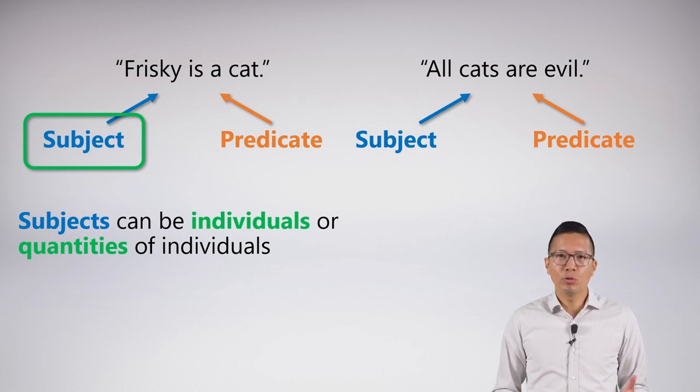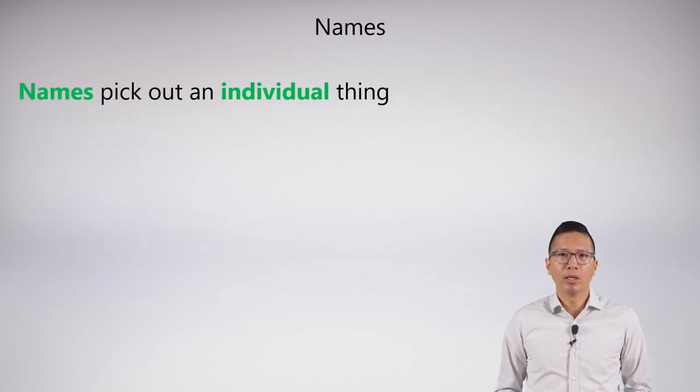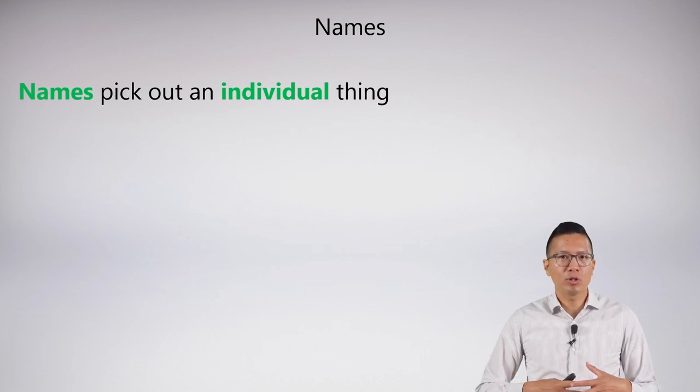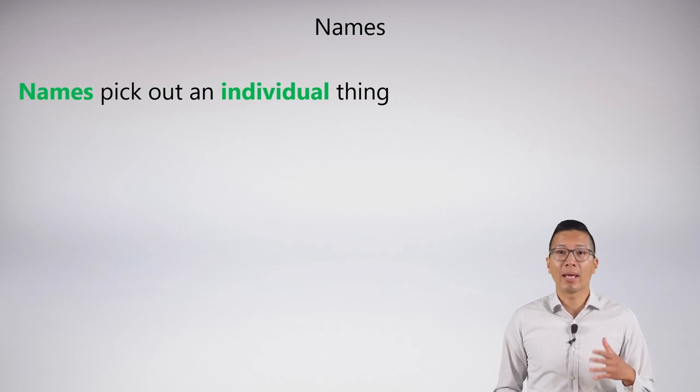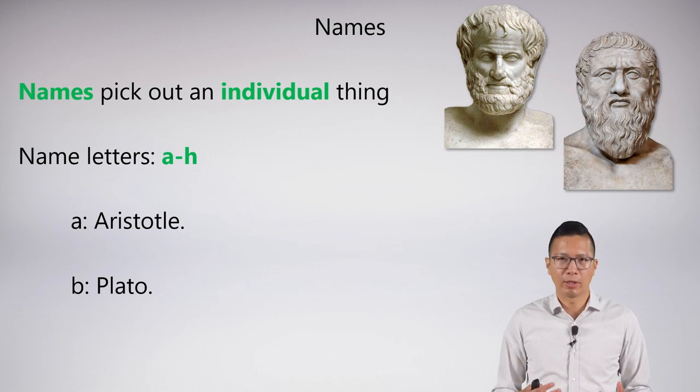What we're using in these types of examples is something called a name. A name is really important for us and we use it in the most standard way that we know. A name is something that picks out an individual thing. Here are examples of names: Aristotle and Plato.